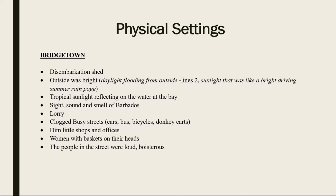Outside was bright — in line two the story says 'daylight flooding from outside,' giving the idea of a sunny place. Next we see tropical sunlight reflecting on the water at the bay, which is an inlet of water. We also see the description of the sights and smells of Barbados, described as an alien sight and sound to the narrator. We see a lorry — a large vehicle used to transport goods — clogged busy streets filled with cars, buses, bicycles, donkey carts, and people. We see dim little shops and offices, women with baskets on their heads, and loud, boisterous people on the streets.